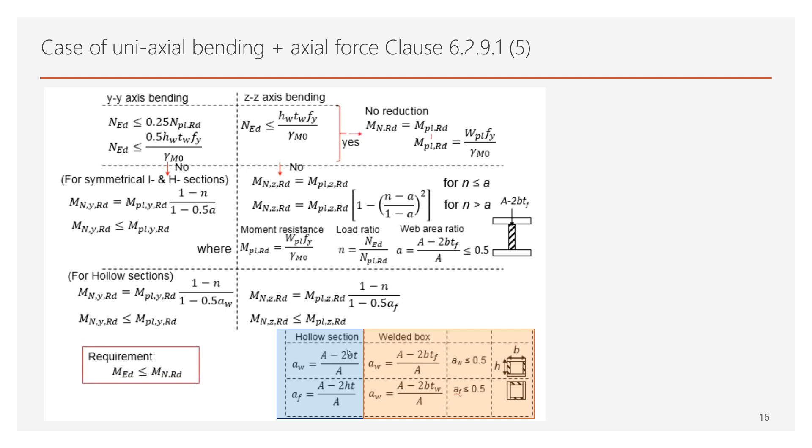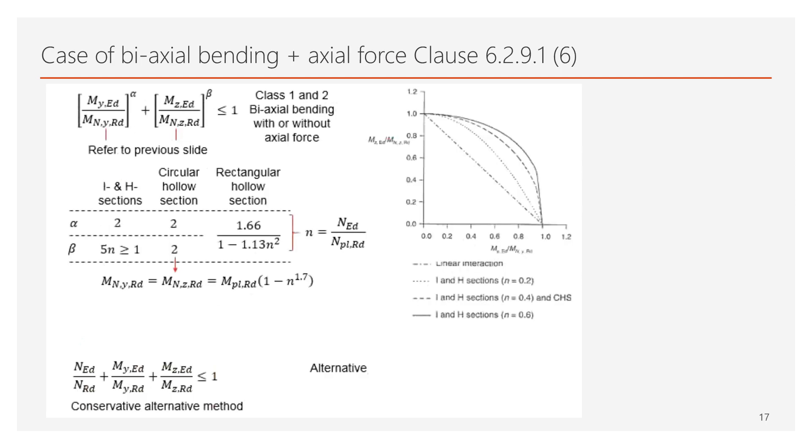Only the parameter aw and af differ, which are highlighted in the case of the hollow type of sections and the welded box sections. But the conclusion is the same for these type of sections too. Namely, the moment resistance could decrease in the existence of the bending moment and the axial force. Ultimately, the MED must be smaller or equal to MNRD. The equations and explanations till now were applicable for the uniaxial bending only.